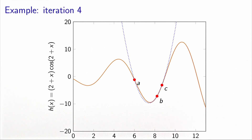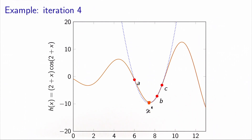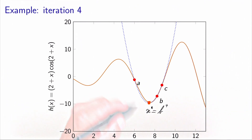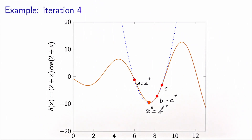At iteration four, we compute another quadratic interpolation. The optimal value x-star is to the left of B. Since h(x-star) is lower than h(B), x-star becomes the new B-plus. A stays as is, and the old B becomes C-plus. The new value of B-plus is now very close to the local optimum. In just four iterations, using only function values and no derivatives, we have found a good approximation of the local optimum.